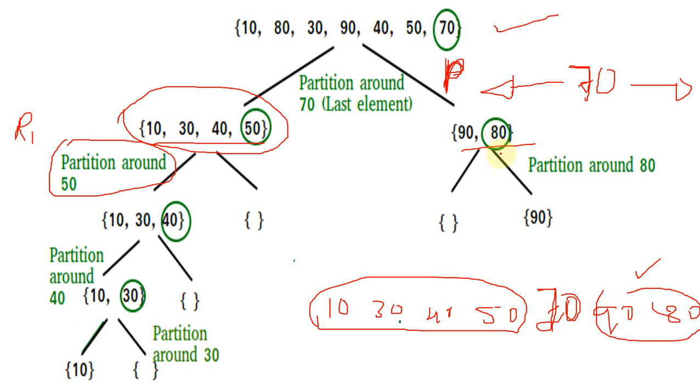Similarly right subtree, 90 and 80. Of course according to our initial rule, last element must be our pivot, so 80 is pivot. Here is one element to compare. 90 is greater than 80, so 90 goes right of 80. Then automatically n-1 elements are in their correct positions, and the last element is also sorted.